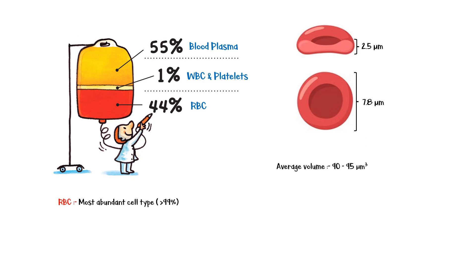The average count of red cells in a healthy male is about 5.2 million cells per cubic millimeter, and in women it's around 4.7 million cells per cubic millimeter.